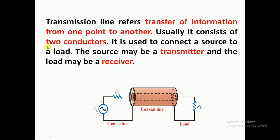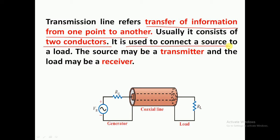In this figure you can see a transmission line explained using the coaxial wire. Generally, a transmission line contains two conductors. These two conductors are required to connect the source to the load. Here in this figure, the source is considered as a generator and the load is shown on the other side.